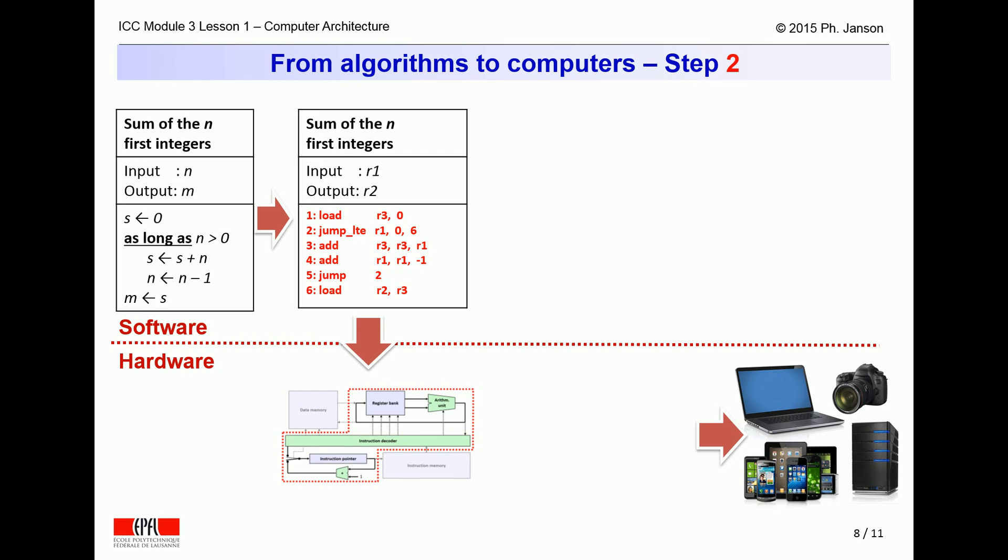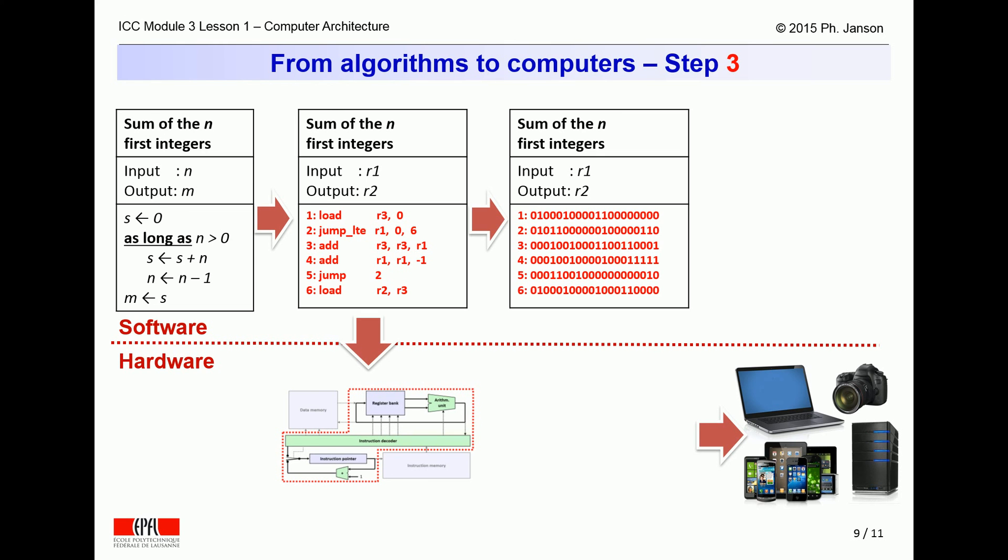The next step will be to explain the high-level architectural building blocks that a computer needs to execute a formal assembler language program. The third step will be to describe how a formal assembler language can be encoded into an even more formal and thus less human readable binary language that a computer can then directly understand.